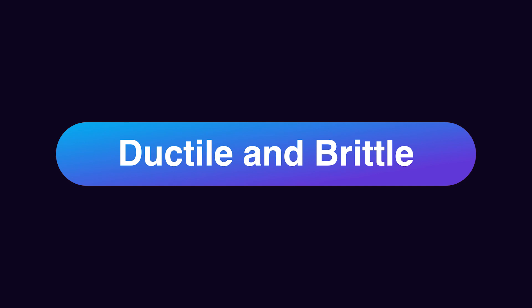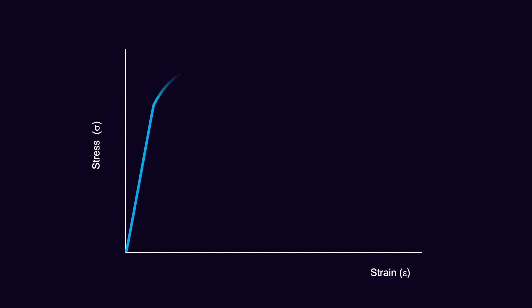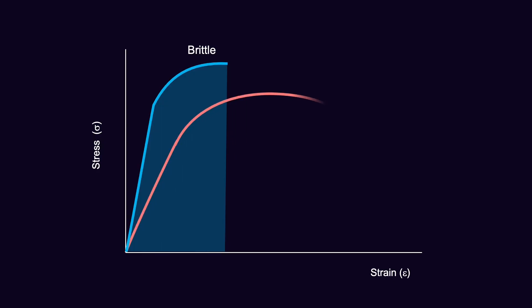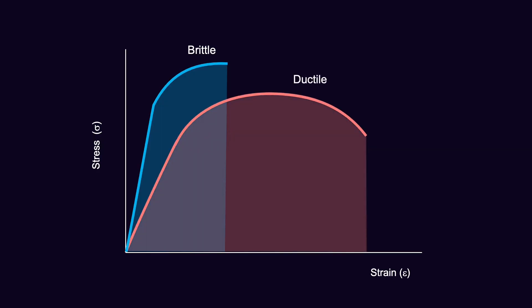Some materials, if you look at the stress-strain graph, reach the failure point very fast — those materials are brittle, such as ceramics and glasses. Some materials require a lot of permanent deformation before they break — they can accept much more strain. Those materials are called ductile.